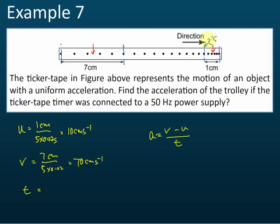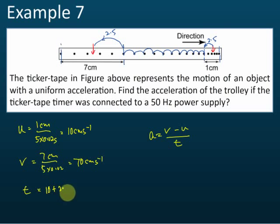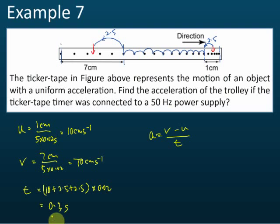From here, counting: one, two, three, four, five, six, seven, eight, nine, ten — so from here to here is 10 ticks. The position of u is here, so from u we add 2.5 ticks on one side, and from here to v is 2.5 ticks on the other side. So the total time taken is 10 plus 2.5 plus 2.5 equals 15 ticks, multiplied by 0.02 seconds each tick, giving 0.3 seconds.